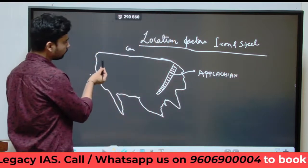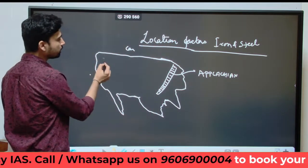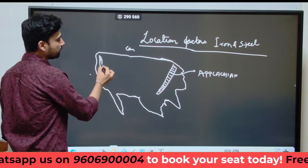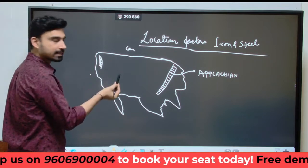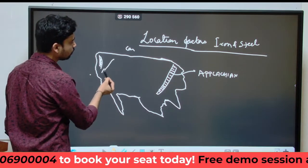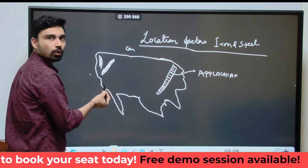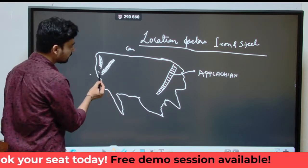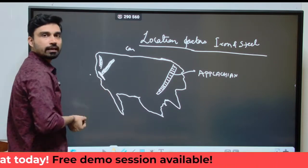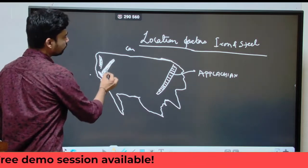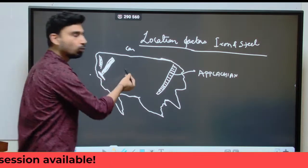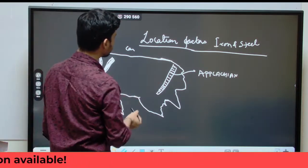On the other side of USA, we have several different mountains such as the Cascade Range. Going slightly more to the east, you have the Rocky Mountains, and slightly more to the west, you have the Sierra Nevada Ranges. So on both sides of USA, we have big huge mountain ranges.